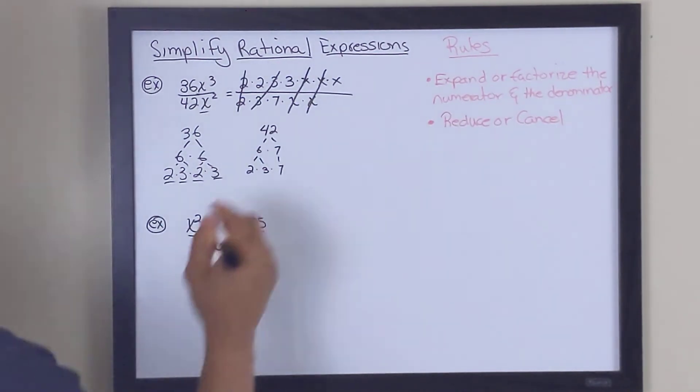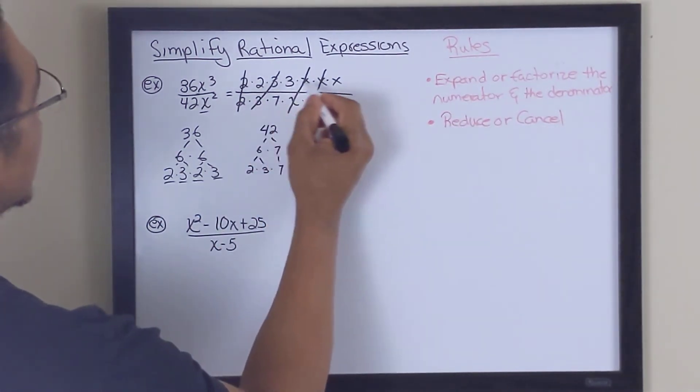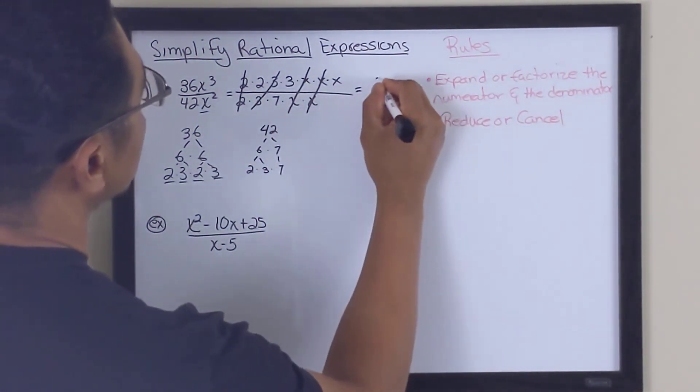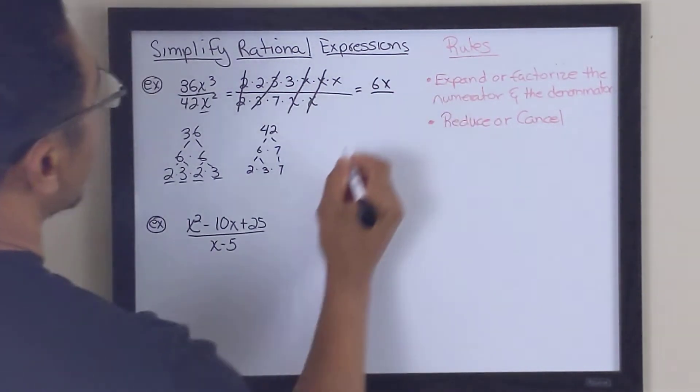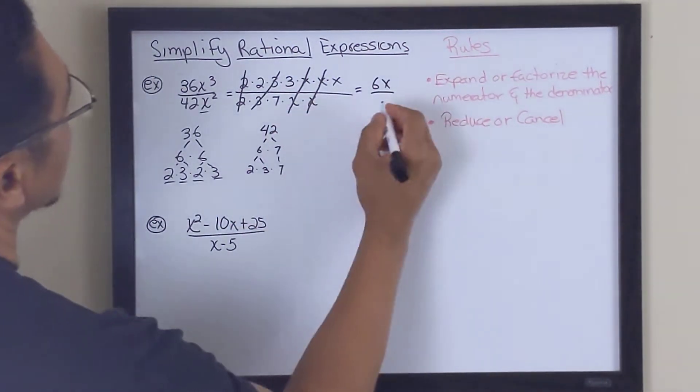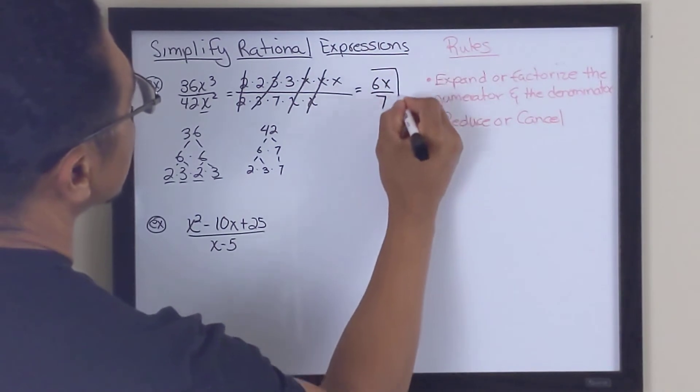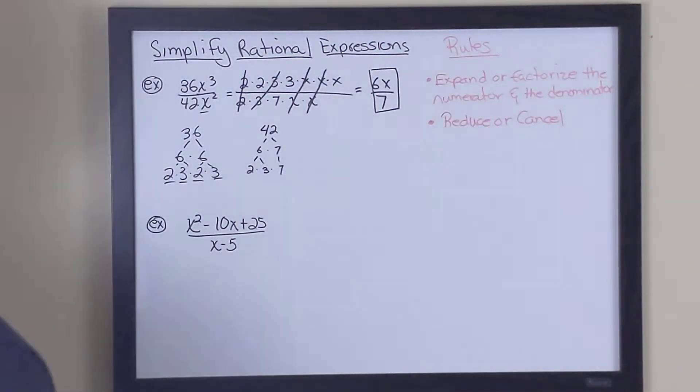So what are we left with? Well, we're left with 2 times 3 times x, which equals 6x. And at the bottom, we're left with 7. So this is our conclusion. So if you missed out on that, you can always rewind the video and pause wherever you need to so you can figure out what we're doing.